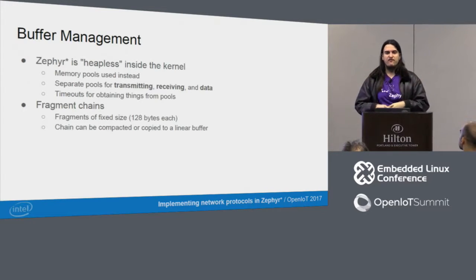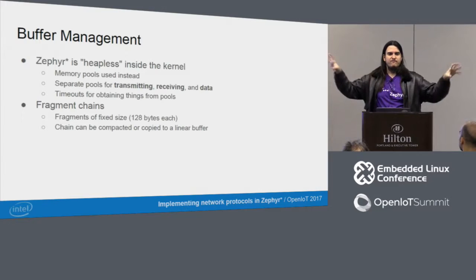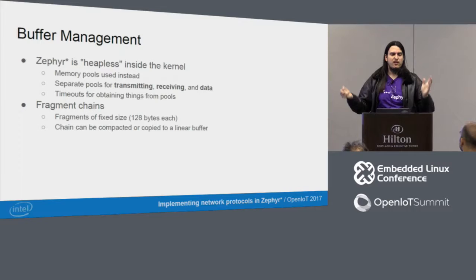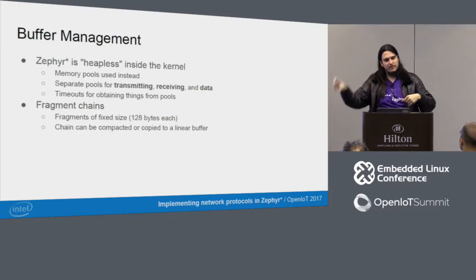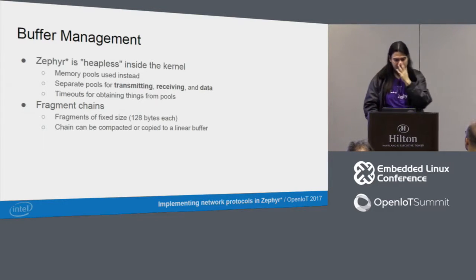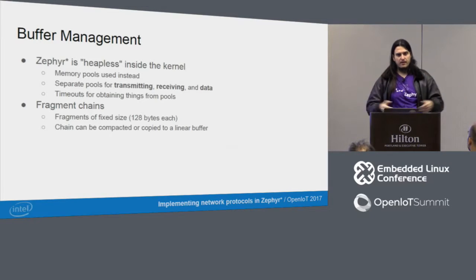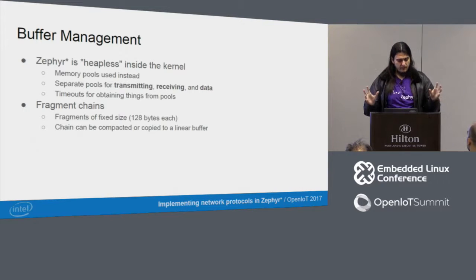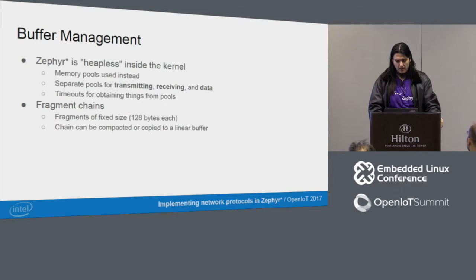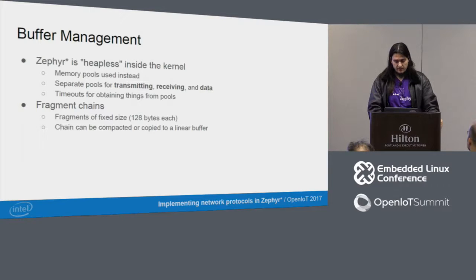Compacting is similar to defragmentation on disks. If there are three fragments and you're using about 50% of each, you copy 50% of the second fragment into the first, throw away the second, and get the next fragment — reducing the number of fragments in flight. For some cases you can copy these to a linear buffer, which is easier to parse for protocols where you don't want to traverse a linked list every time you read a byte.